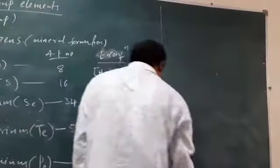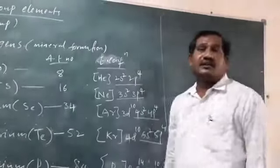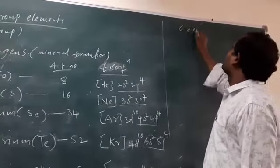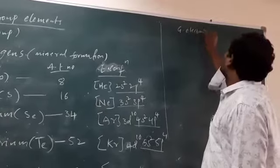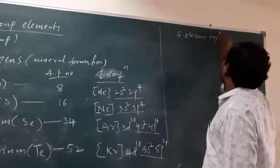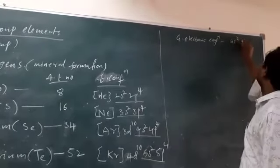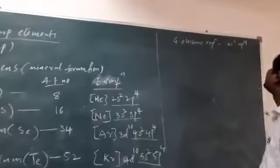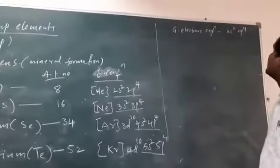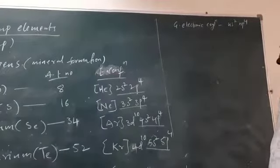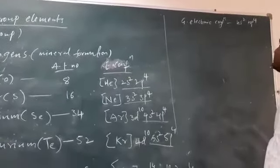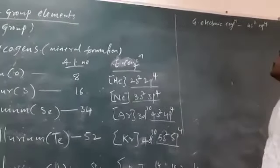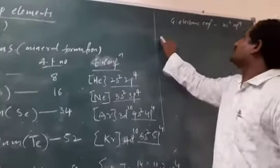So the general outermost electronic configuration of this group is ns2 np4. The valence electrons are 6. In the p shell there are 4 electrons, in the s shell there are 2 electrons.